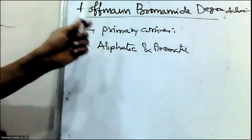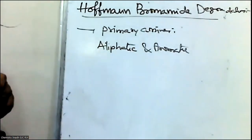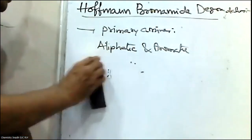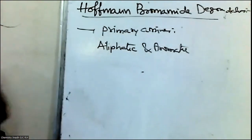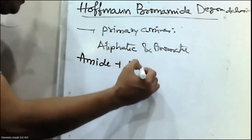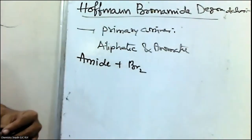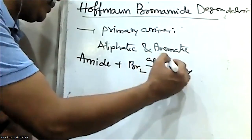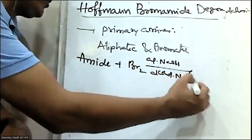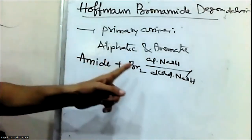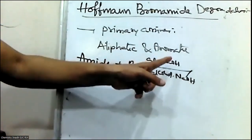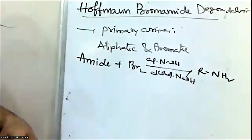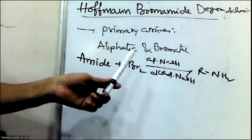In Hofmann Bromamide degradation, the organic compounds containing a CONH2 group are called amides. When amides are treated with bromine in the presence of aqueous or alcoholic sodium hydroxide, primary amines are formed. We are calling this the Hofmann Bromamide degradation.